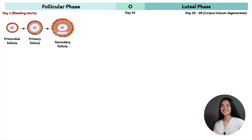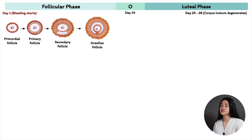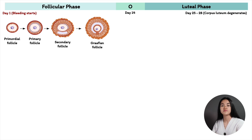From the secondary follicle it transitions into a tertiary follicle, or Graafian follicle. At this stage the oocyte is fully grown, surrounded by a zona pellucida, with multiple layers of granulosa cells, a basal lamina, and theca cells. The first meiotic division has already been completed — the oocyte is now a secondary oocyte, a haploid cell. Immediately after the first meiotic division, the second meiotic division starts but is arrested again in metaphase 2 until fertilization occurs.